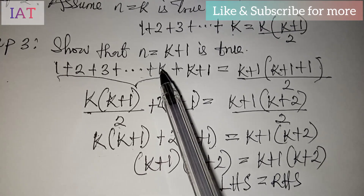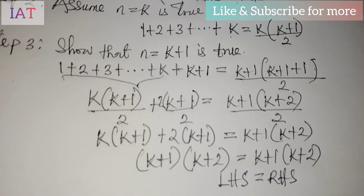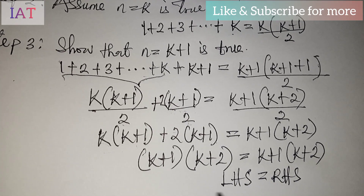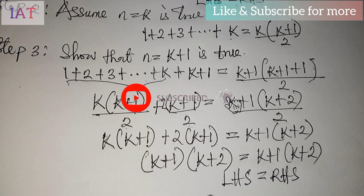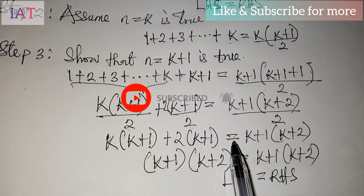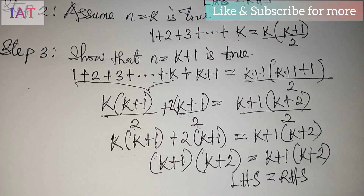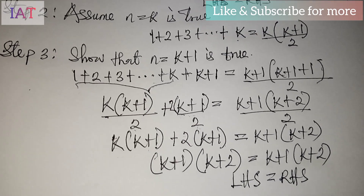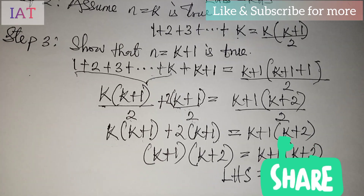So n equals k plus one is true for all positive integers of n. If you're not subscribed to this channel, please hit the subscribe button — I'm going to solve more examples using different approaches. Make sure you subscribe, turn on the notification bell, like this video, and share. Thank you very much for watching.